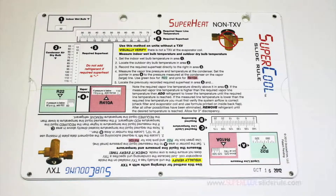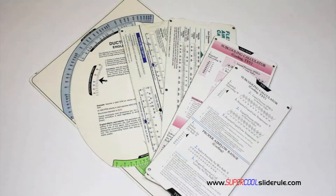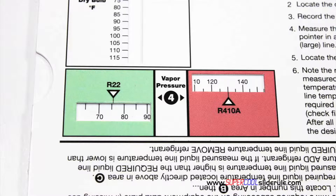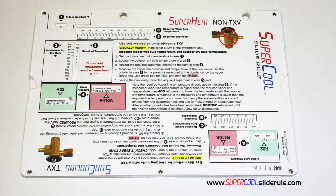I'd like to take a minute to introduce you to the coolest tool in the HVAC industry. Historically, technicians have carried four or five different slide rules — one for R22, one for R410A, one for metal duct sizing, one for flexible duct sizing, and yet others for diagnostics or troubleshooting. Thankfully, those days are gone. This one tool will allow you to charge a system with R22 or R410A in either the super heat or sub cooling method.